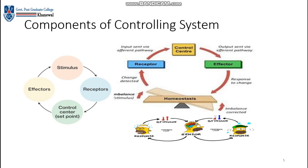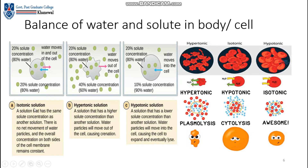We have an example of temperature regulation. If temperature decreases, we feel cold and shivering starts. At the same time, if temperature increases, sweating begins. These responses are initiated by the effectors. This is the balance of water and solute in a body or a cell.